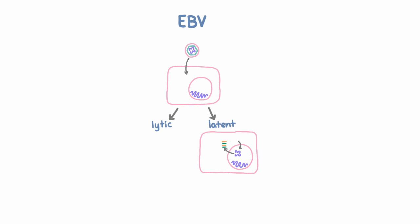So what do these transcribed genes do? They tell the cell to stay alive and proliferate instead of dying after its normal lifespan. The way they do this is to down-regulate apoptosis and up-regulate various proliferative pathways. Why would the virus do that? Because if the B cell survives, then the virus inside it survives, and if the B cell replicates, then it replicates the viral DNA in its nucleus too.